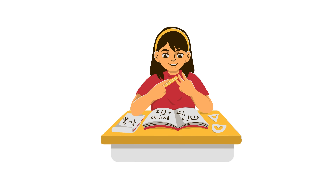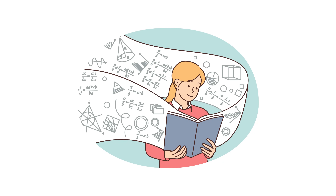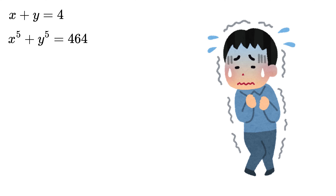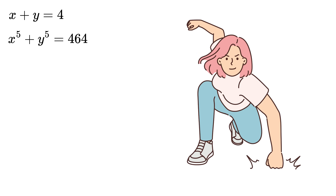Today we will be solving a nice math olympiad question: if x plus y equals 4 and x to the power 5 plus y to the power 5 equals 464, find out the values of x and y. This problem looks hard but there's a neat way to solve it.